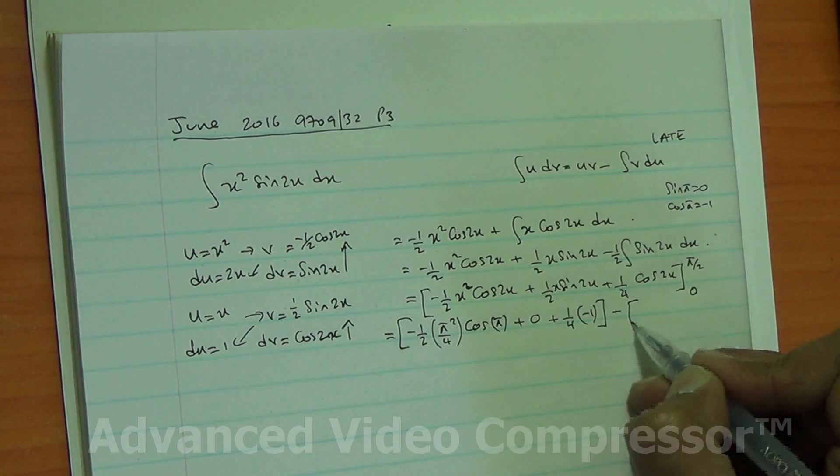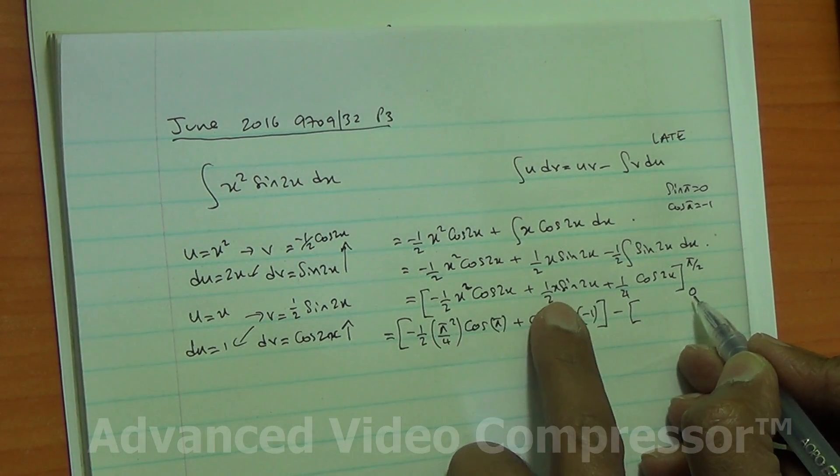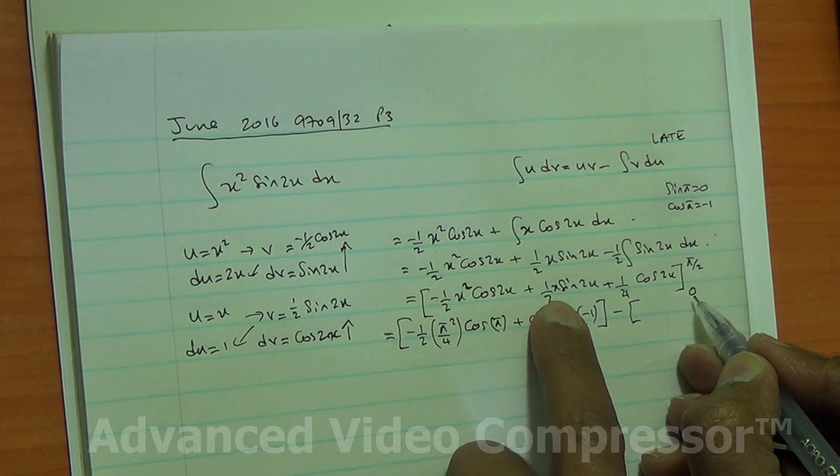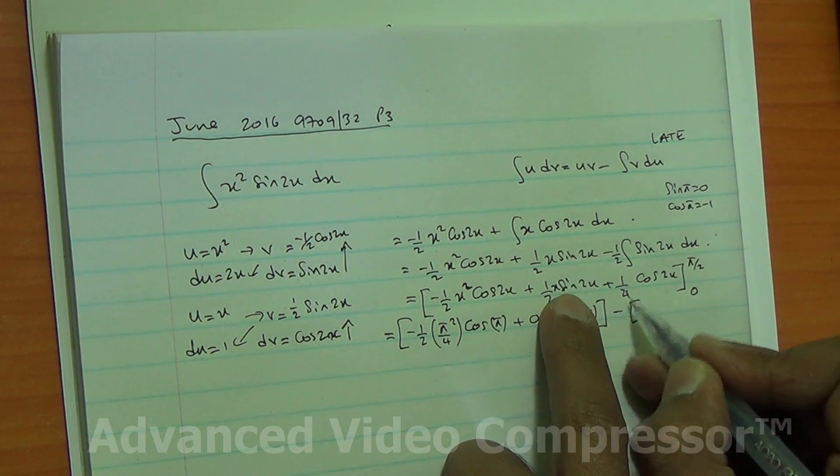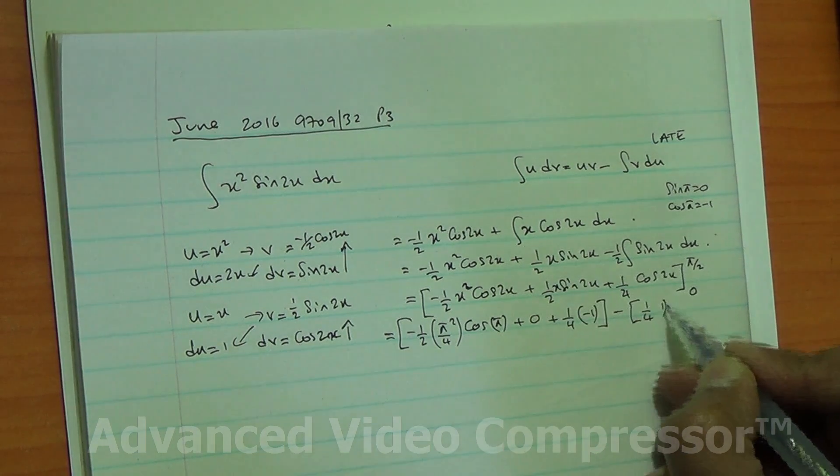That's the upper limit, minus the lower limit. 0 comes here, becomes 0. Half times 0 is 0, the whole expression becomes 0. 1 quarter times cos of 0 is basically 1.